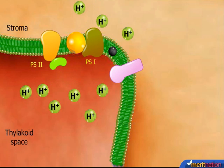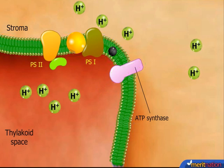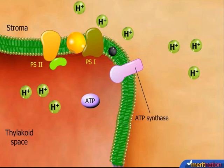The protons pass through the ATP-synthesizing enzyme, ATP synthase. As the protons pass through this enzyme, ATP gets synthesized from ADP and inorganic phosphate.